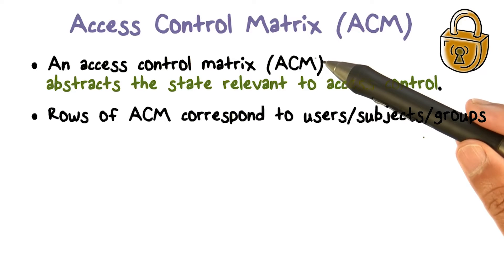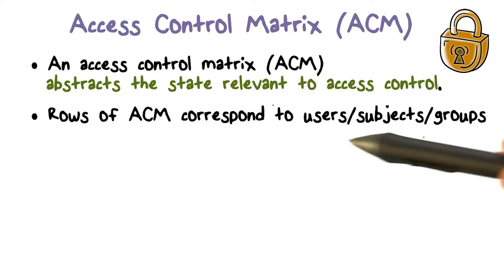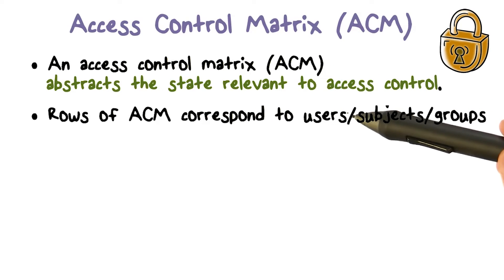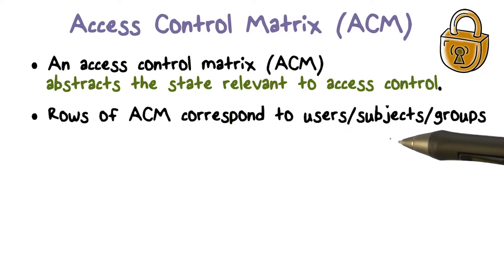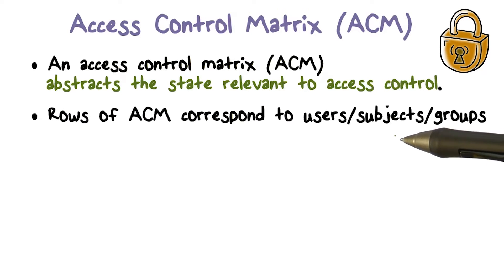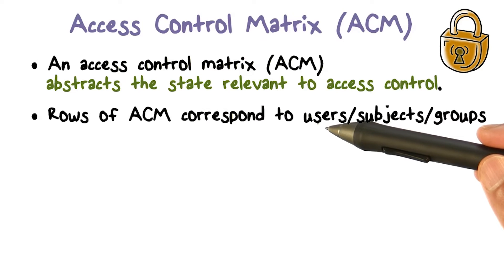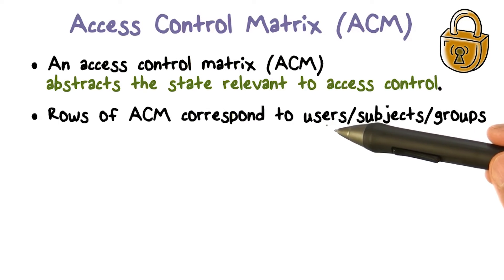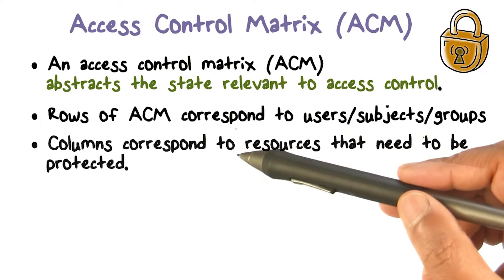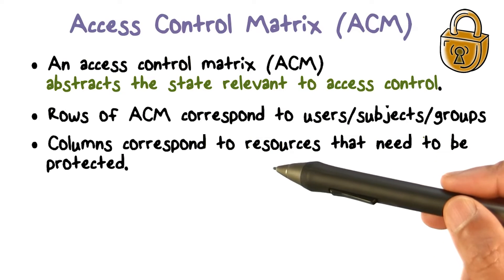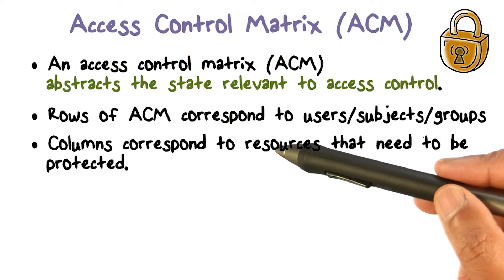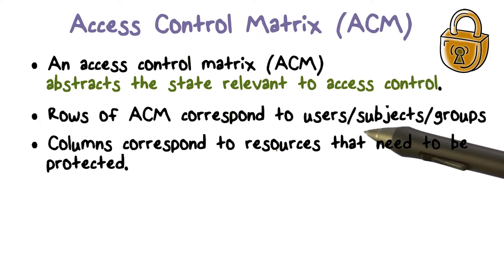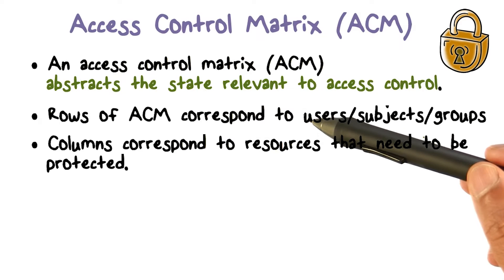In an access control matrix, rows are defined by the users or subjects that we have in the system. So rows actually correspond to the sources of requests, the subjects or the users. For example, if Alice is a user in the system, there is going to be a row for Alice. The other dimension this two-dimensional matrix has to define is its columns.